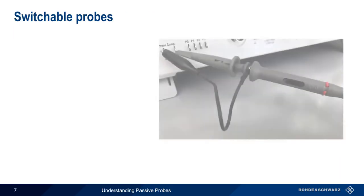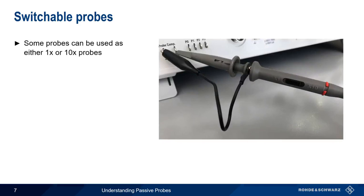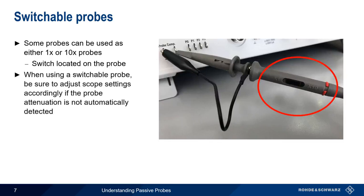There are also so-called switchable probes that can be used either as 1x or 10x probes by moving a switch on the side of the probe. The position of this attenuation switch can't normally be sensed by a scope, so when using a switchable probe, we have to adjust the scope settings manually.